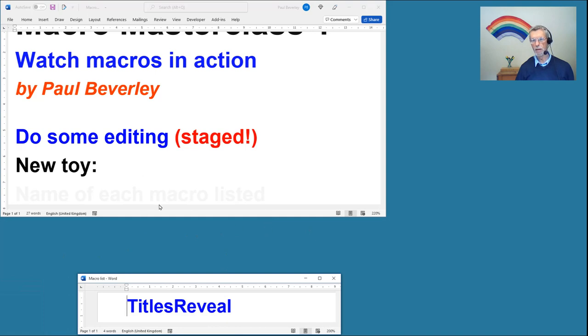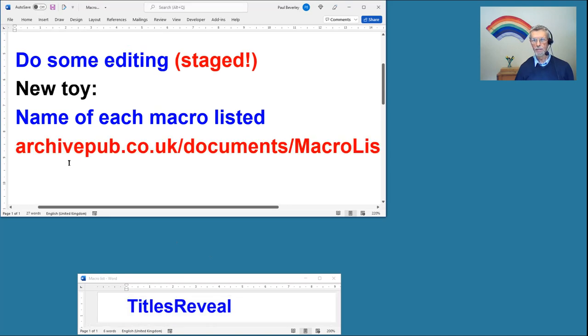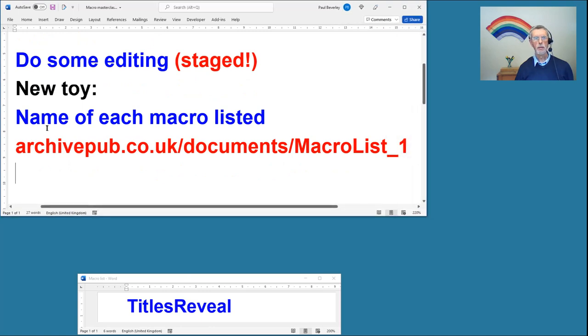I've got a new toy, so if I bring it in, there we go. It will show you that I've just used the macro Titles Reveal. So if I show you my next heading, it will tell you that I'm showing you the name of each macro listed. Titles Reveal has changed color because I've run it again.